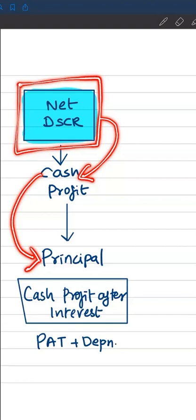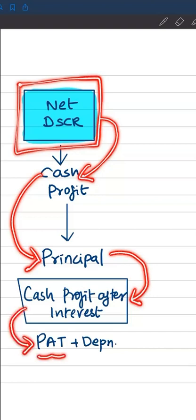So here, when we say cash profit, it is cash profit after payment of interest. That means it is only profit after tax added back by depreciation and amortization.